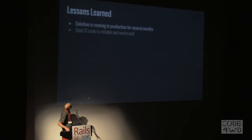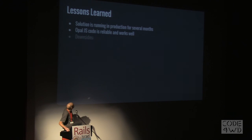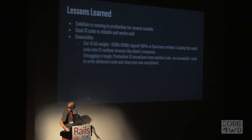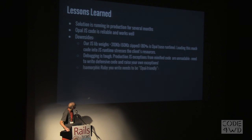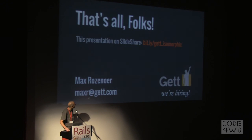Lessons learned: the solution has been running in production for about half a year. The Opal-generated JavaScript code is reliable, but there are some downsides. The JavaScript library is heavy and stresses the client when loaded into the JavaScript container. Debugging is tough — bug exceptions from minified JavaScript code are difficult. And there are limitations on the Ruby you can write: it cannot have any gem dependencies, you need to keep it very, very lean.